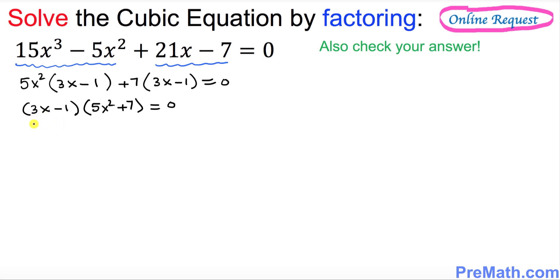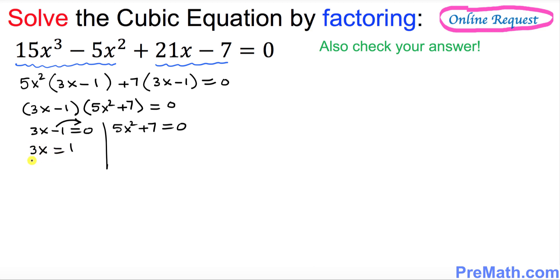Now split them up: 3x minus 1 equal to 0, and 5x squared plus 7 equal to 0. Move the negative 1 to the other side, so 3x equals 1. Divide both sides by 3, so x turns out to be 1 over 3 as one of our solutions.